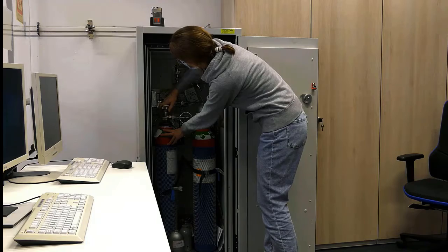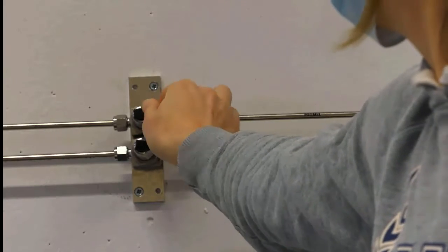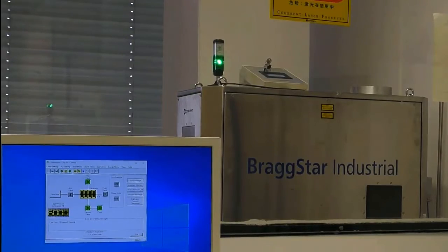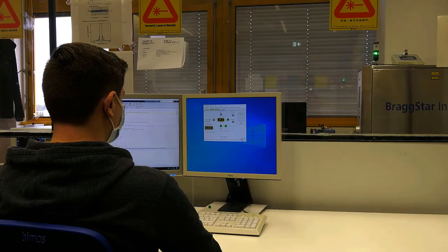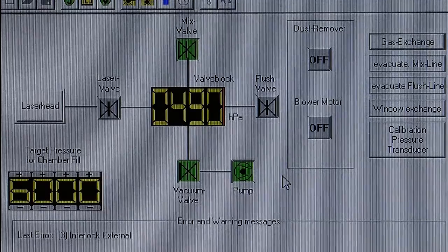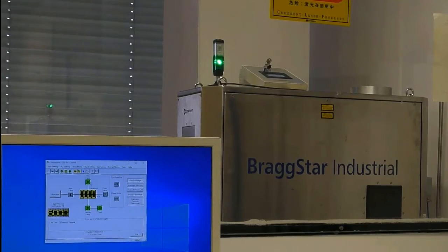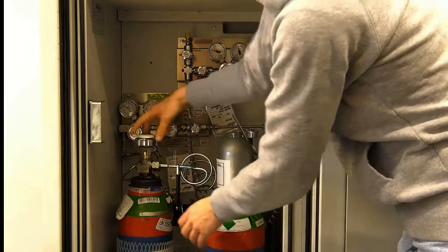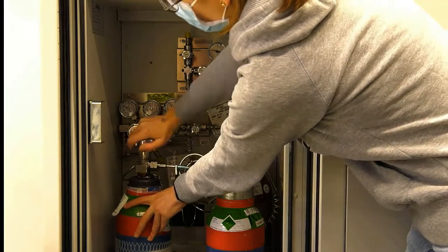Before we can start the laser, we have to do a gas exchange, because the laser gas degrades over time. Therefore, we can start the automatic gas exchange, where the old gas is removed and the laser head is filled with new gas. Once the gas exchange is done, we close the gas bottles and we can start lasing.